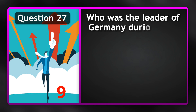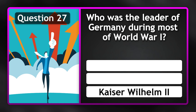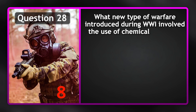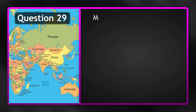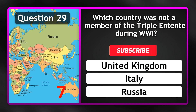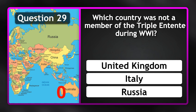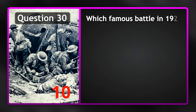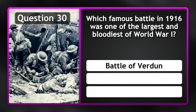Who was the leader of Germany during most of World War I? Kaiser Wilhelm II. What new type of warfare introduced during WW1 involved the use of chemical weapons? Chemical warfare. Which country was not a member of the Triple Entente during WW1? Italy. Which famous battle in 1916 was one of the largest and bloodiest of WW1? Battle of Verdun.